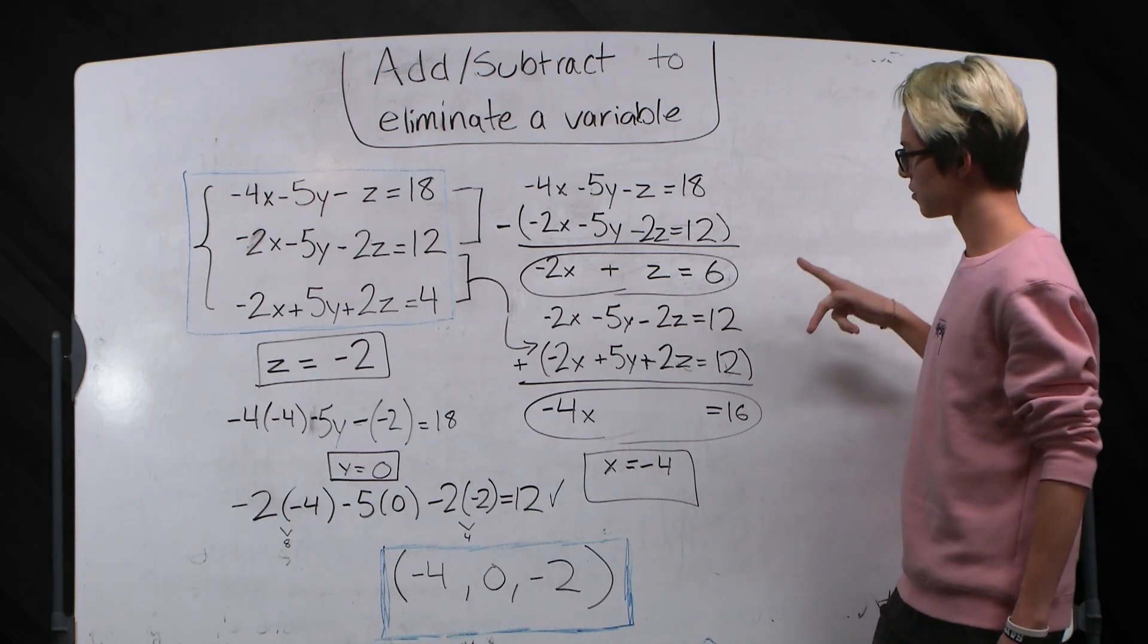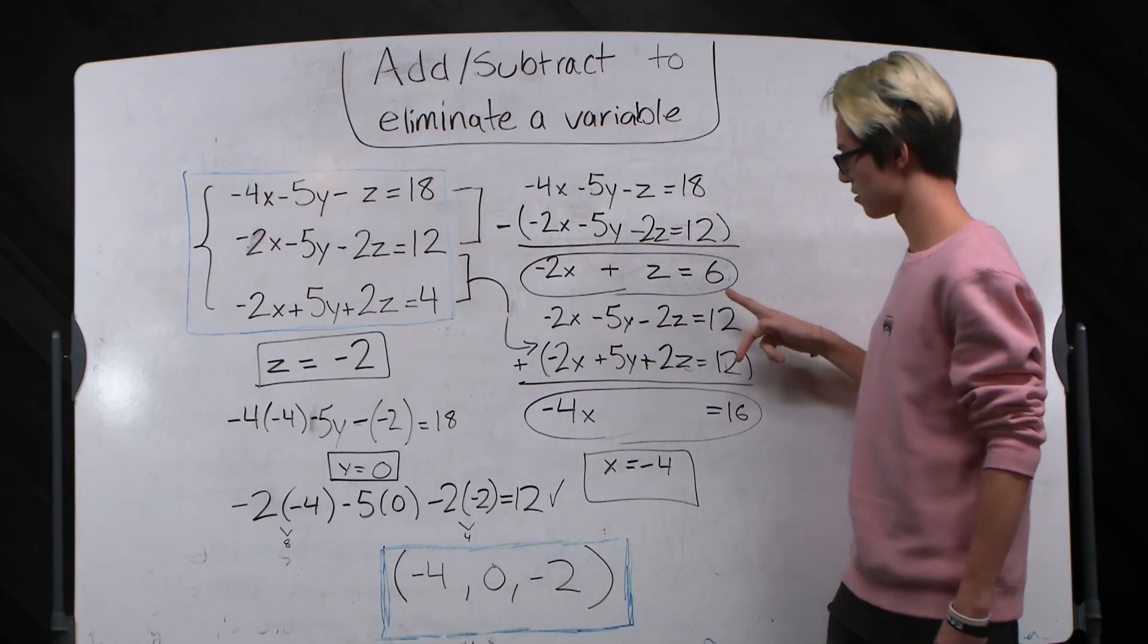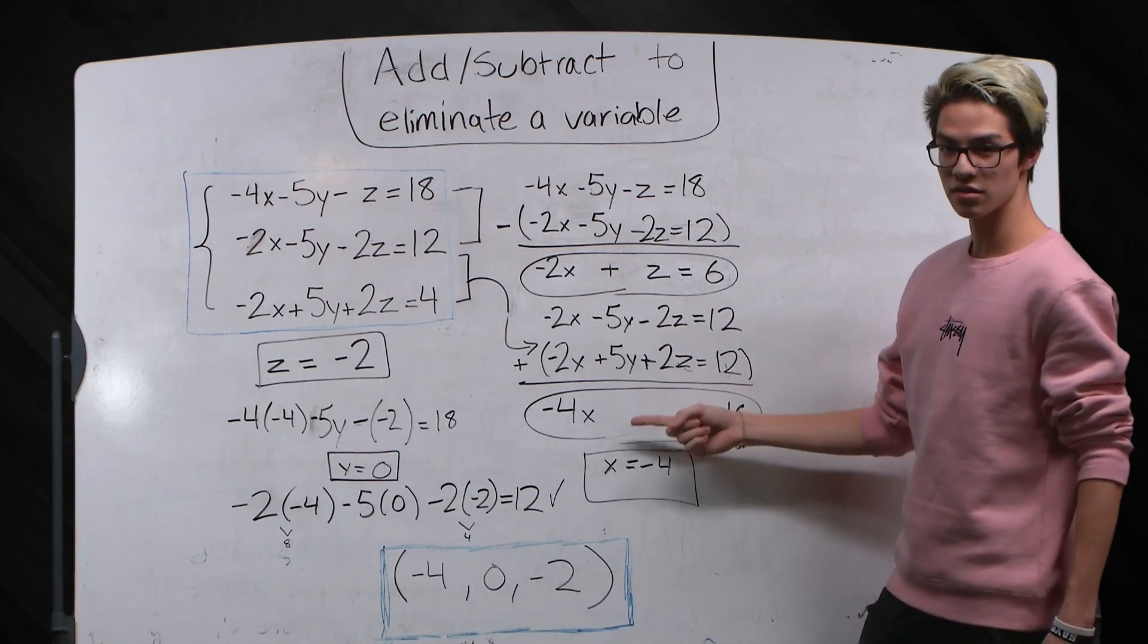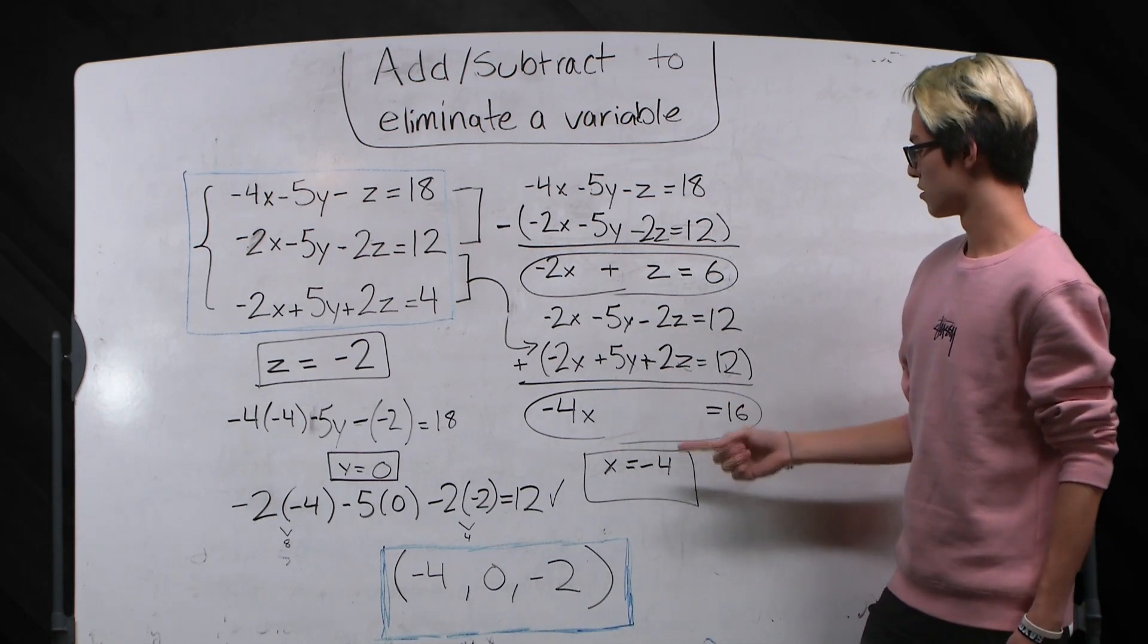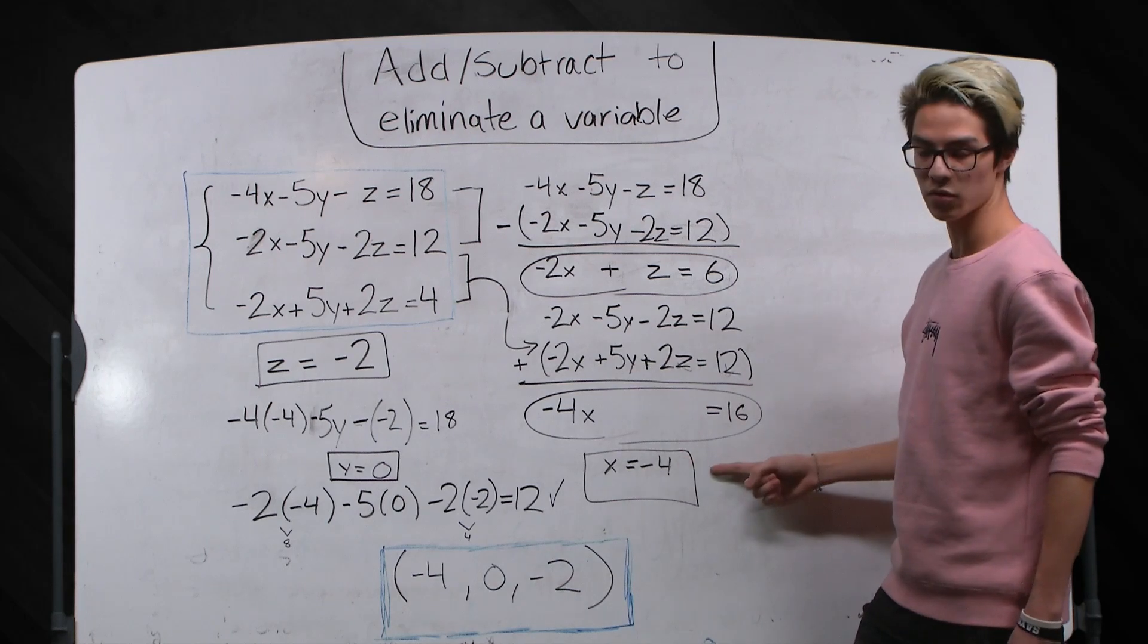Now from here we can see that we have two variable systems of equations and we can see that this one's actually easier because it only has one variable. So solving for x I get x equals negative 4.